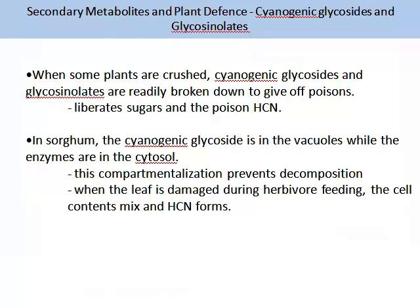When some plants are crushed, cyanogenetic glycosides and glucosinolates are readily broken down to give off poison. Sugars are liberated and hydrogen cyanide is released. In sorghum, for example, the cyanogenetic glycoside is stored in the vacuoles while the enzymes are in the cytosol. This compartmentalisation prevents decomposition. When the leaf is damaged during herbivore feeding, the cell contents mix and hydrogen cyanide forms.